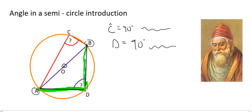In summary, any diameter forms an angle of 90 degrees, but that angle must be on the edge of the circle.